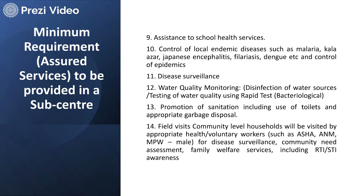Sub-centers also look after the control of local endemic diseases such as malaria, kala-azar, Japanese encephalitis, filariasis, and dengue. Disease surveillance — monitoring the frequency and timing of disease occurrence — is carried out so diseases can be controlled in time. Adequate care is taken for water quality monitoring, since many diseases arise from contaminated water. Promotion of sanitation including building toilets and appropriate garbage disposal systems is undertaken, along with health volunteers like ASHA workers who provide community services, maintain records, and raise awareness.